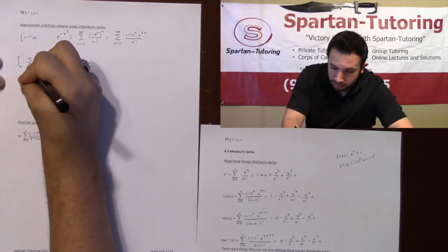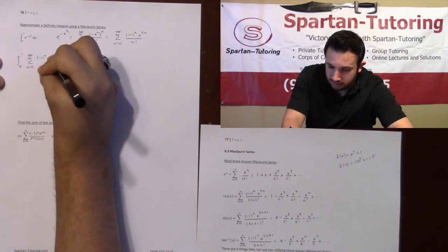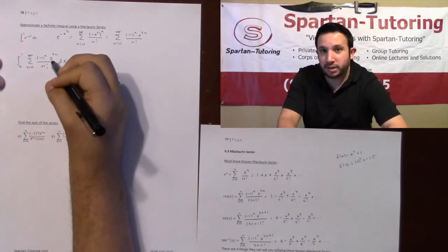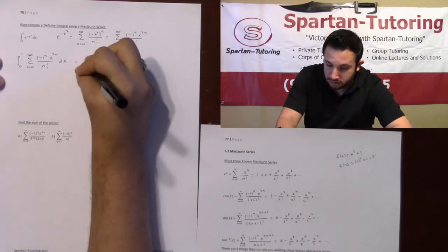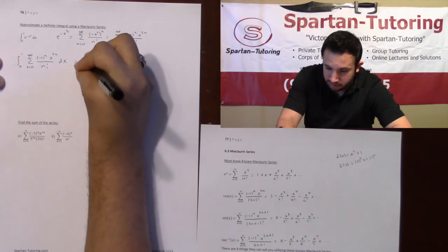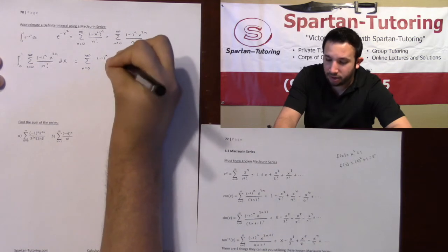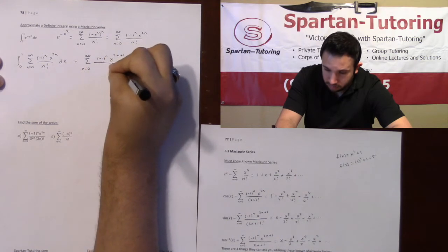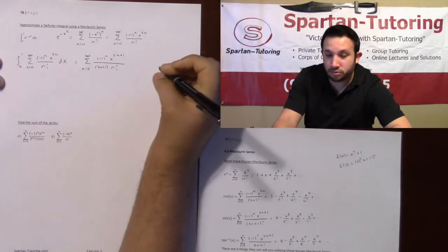So this is going to be the sum from zero to infinity of negative one to the n, x to the two n, over n factorial. Integrating this with respect to x, remember you add one to the exponent and divide. This will be the sum from n equals zero to infinity of negative one to the n, x to the two n plus one over two n plus one times n factorial.